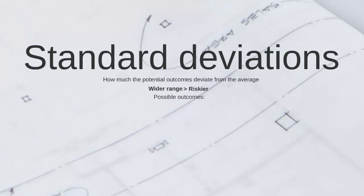We've got two projects with the following potential outcomes. Project number one has an average outcome of £100 profit, a best possible outcome of £100,000 profit, and a worst possible outcome of a £100,000 loss. Project number two also has an average outcome of £100,000 profit, but this time the best possible outcome is £1,000 in profit and the worst possible outcome is a £1,000 loss.